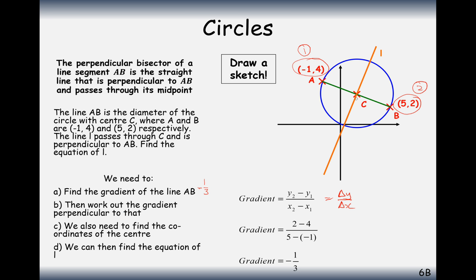The next part is to work out the gradient of line L. Because this meets at a right angle, the two gradients must multiply together to make negative 1. Substituting in: minus a third times m2 equals minus 1, and you'll get the gradient as 3. So the gradient of line L is 3.